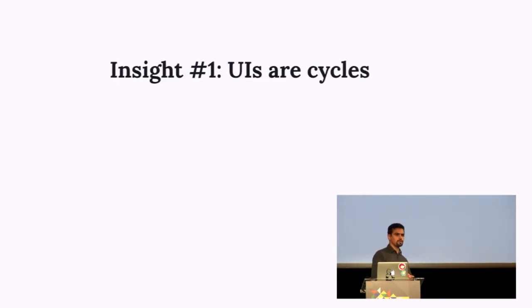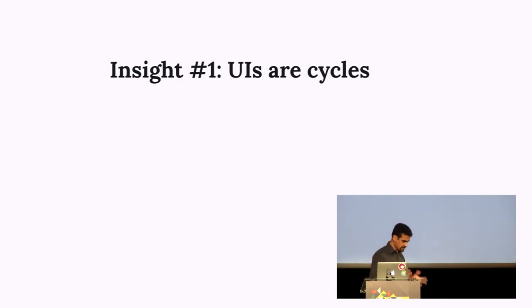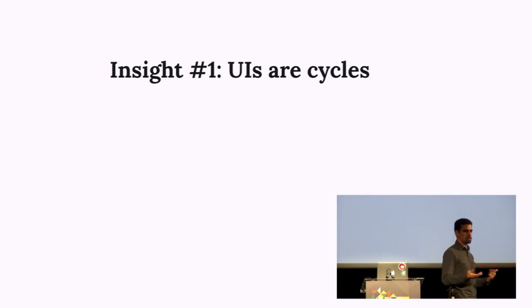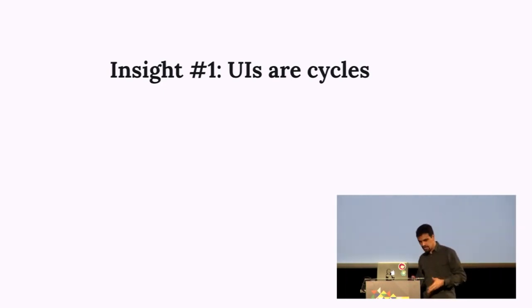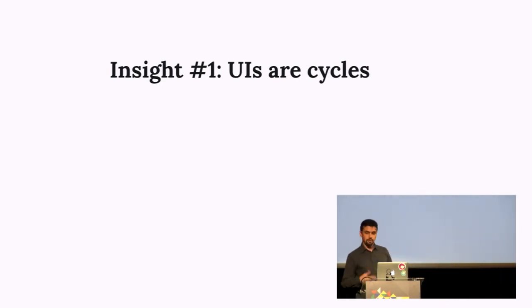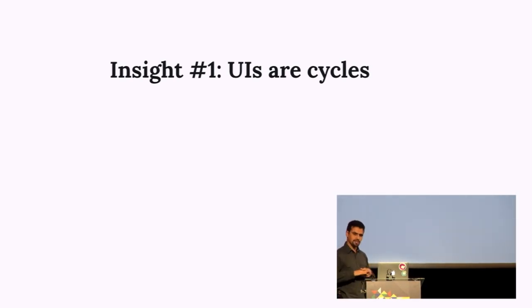All user interfaces can be expressed as cycles. This is our first insight when trying to find an interesting and natural architecture. I challenge you to find a UI that doesn't work on the low level as a cycle.